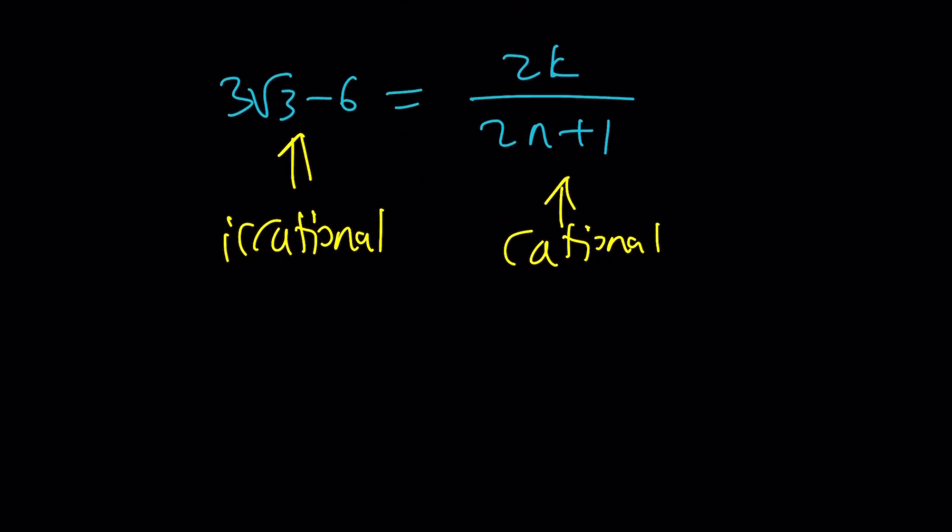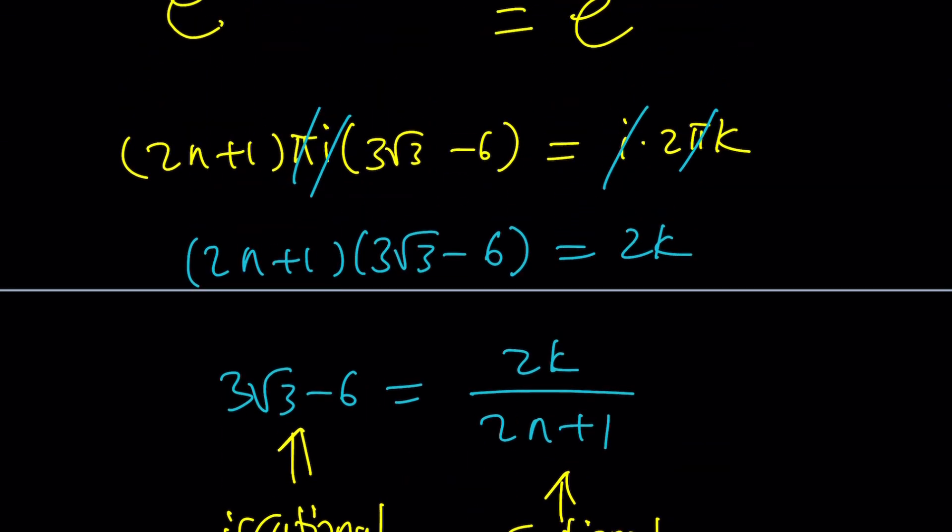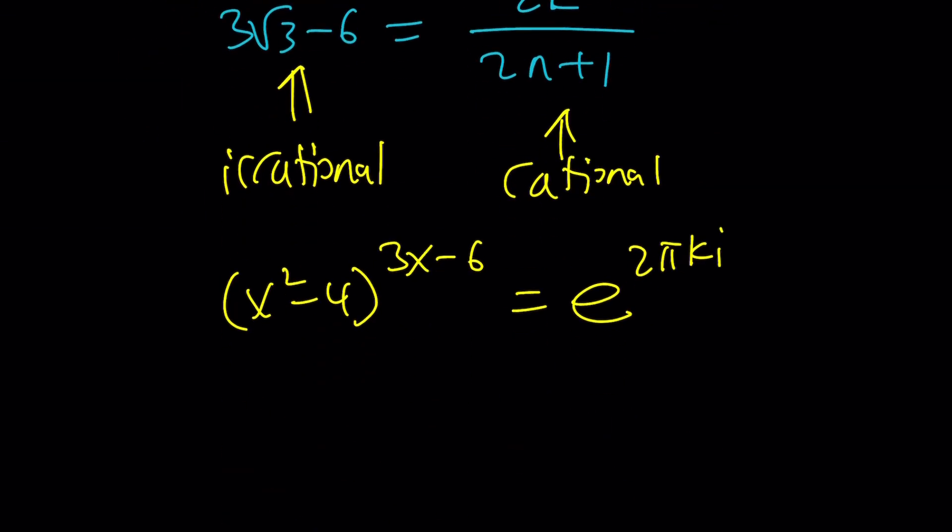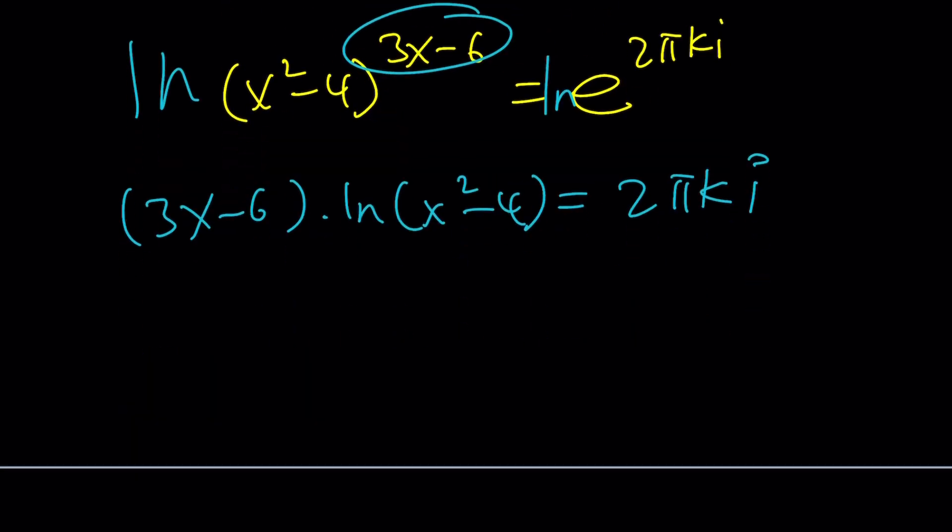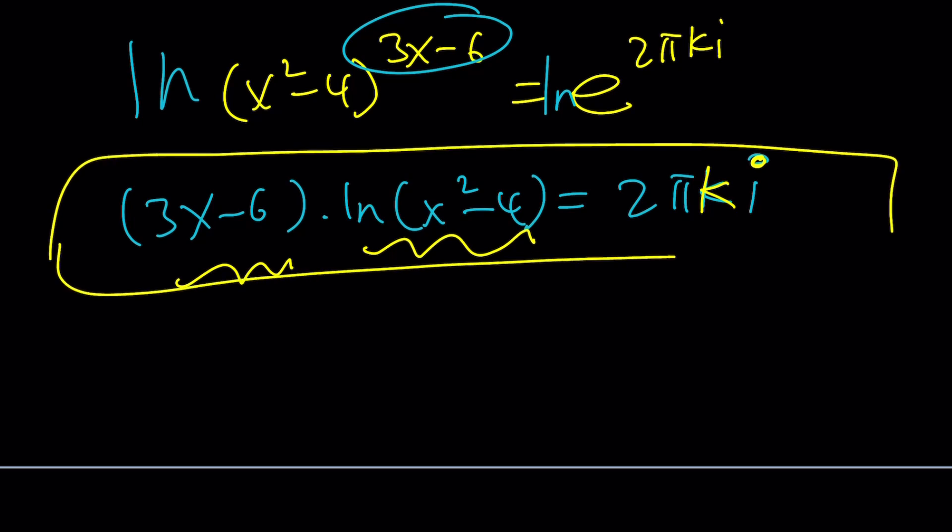You can try different options. One of the things you can do is you can also natural log both sides. But of course, do write this as 2 pi ki before you do it. And then, once you natural log both sides, you're going to get 3x minus 6 times ln of x squared minus 4 is equal to 2 pi ki. So we kind of have like a really non-standard weird equation because we have this linear and we have the ln of a quadratic and that product is supposed to equal a constant. Could there be solutions? Absolutely, and if you use Wolfram Alpha, it's probably going to give you some type of solution. I haven't tried it, but you're more than welcome to do it. And let us know in the comment section down below.